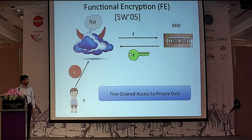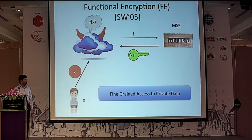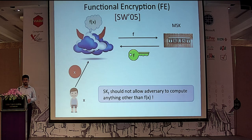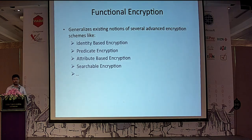What is the security guarantee we want? Suppose the cloud service provider — the decryptor — is malicious. We do not want it to learn anything about the message that was encrypted apart from f(x). Intuitively, the secret key for the function should not allow the adversary to compute anything other than the value f(x) given the ciphertext. Functional encryption is a very general paradigm; it is a generalization of attribute-based encryption, predicate encryption, and so on.